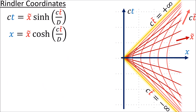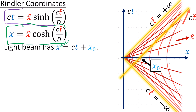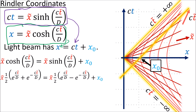Now let's look at what a light beam looks like in the Rindler coordinate system. In inertial coordinates, a diagonal 45-degree light beam traveling to the right has the equation x equals ct plus a constant x0, where x0 tells us where the light beam intersects the x-axis. Let's substitute in the Rindler expression with cosh for x and the Rindler expression with sinh for ct. Now let's rewrite cosh and sinh using their exponential representations.